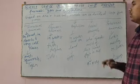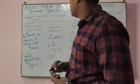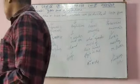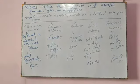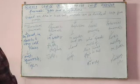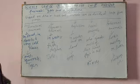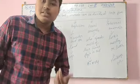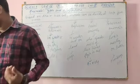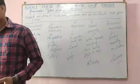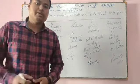So this covers terrestrial, aquatic, amphibian, aerial, and arboreal animals. In the next topic, we will look at what animals eat — their eating habits.